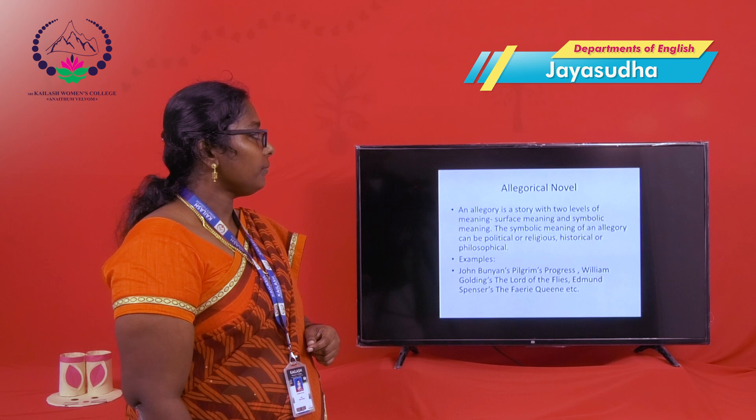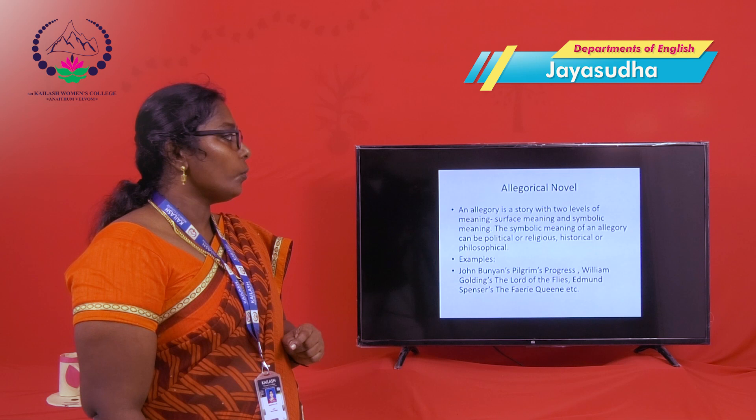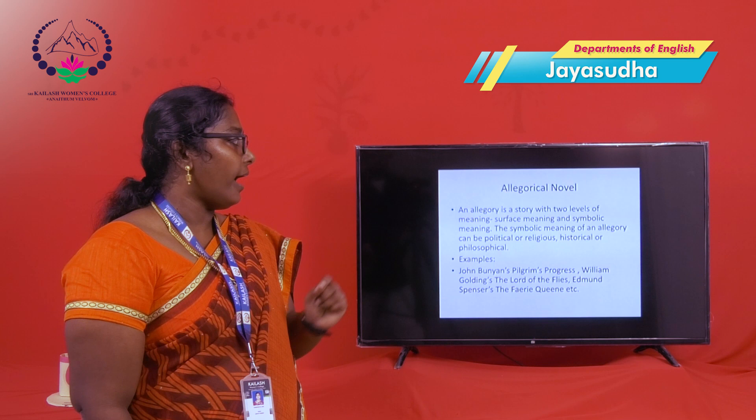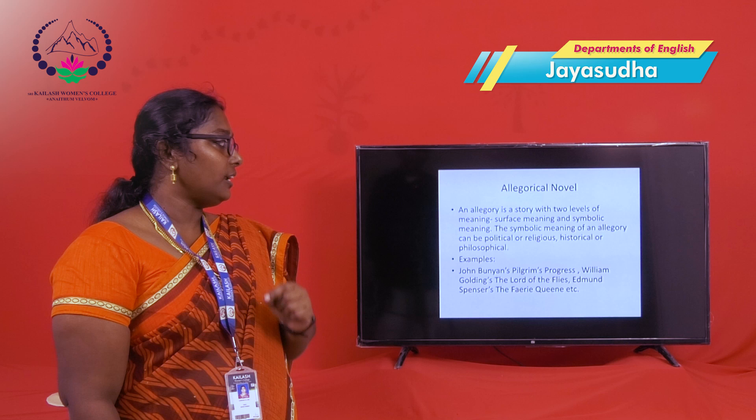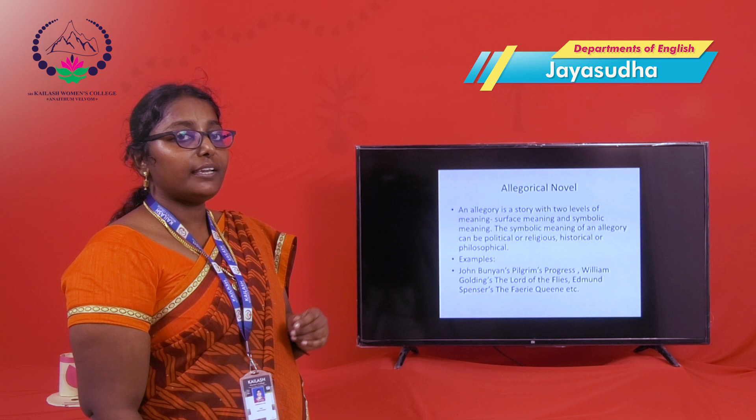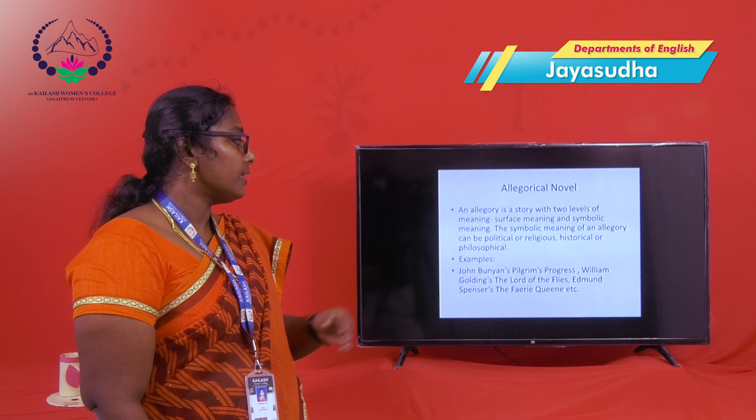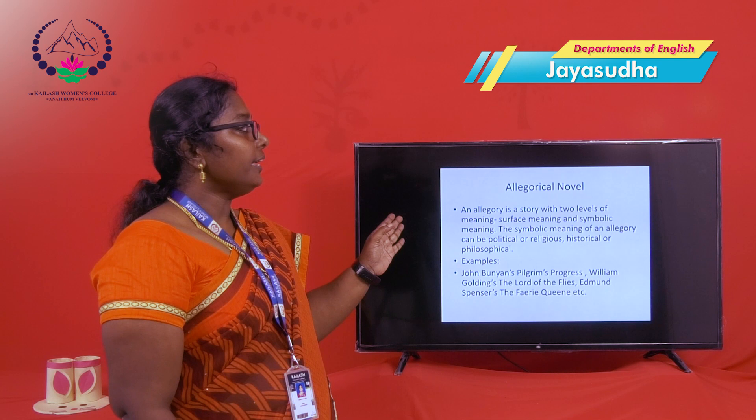The next type is the allegorical novel. An allegory is a story with two levels of meaning: the surface level meaning and the symbolic meaning. The symbolic meaning in an allegory can be political, religious, historical, or philosophical. Examples of allegorical novels are John Bunyan's Pilgrim's Progress, William Golding's The Lord of the Flies, and Edmund Spenser's The Faerie Queene.